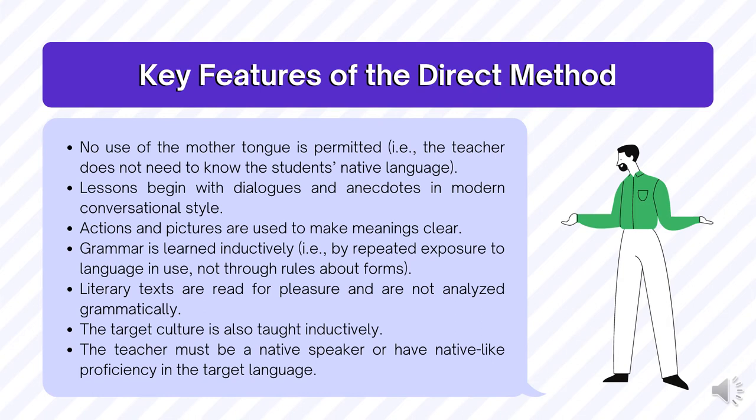Key features of the direct method. Number one, no use of the mother tongue is permitted — for example, the teacher doesn't need to know the student's native language. Number two, lessons begin with dialogues and anecdotes in modern conversational style. Number three, actions and pictures are used to make meanings clear. Number four, grammar is learned inductively — for example, by repeated exposure to language in use, not through rules about forms.